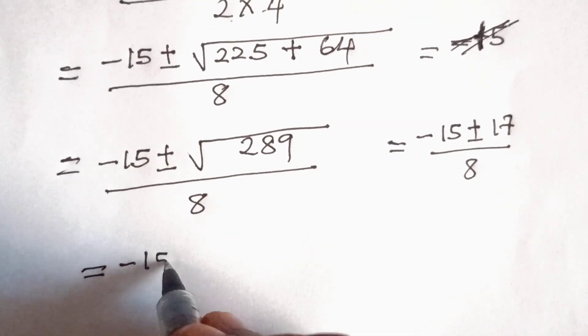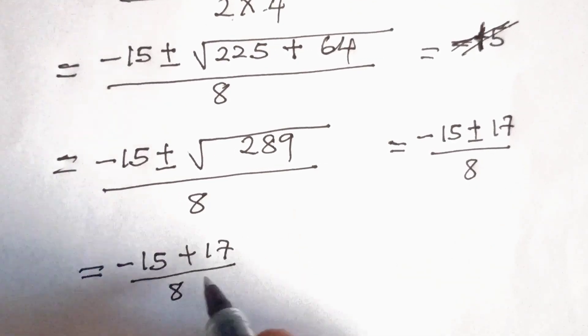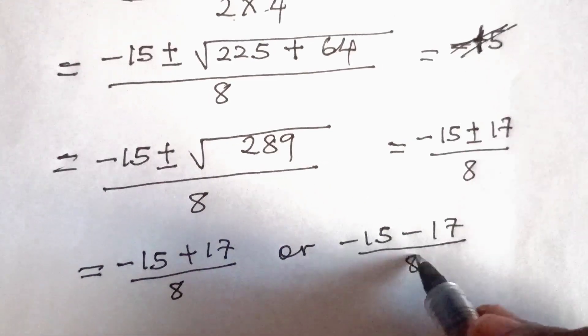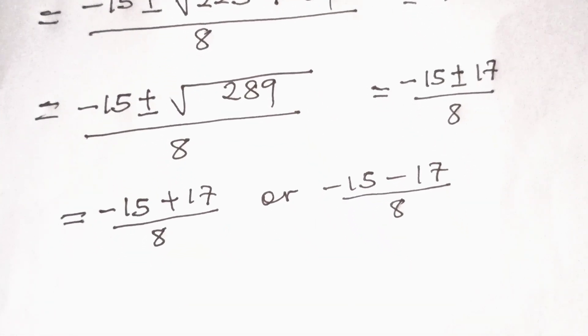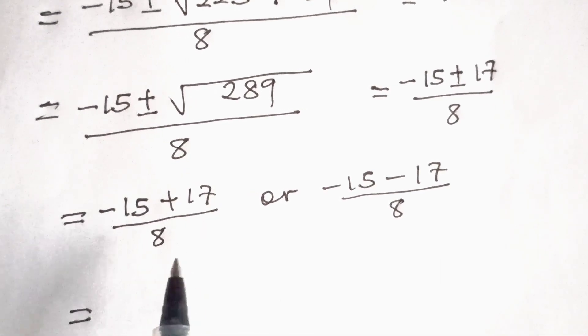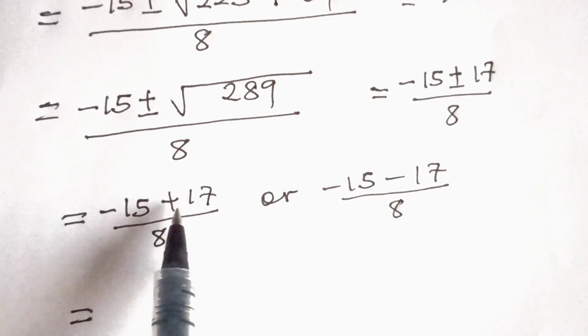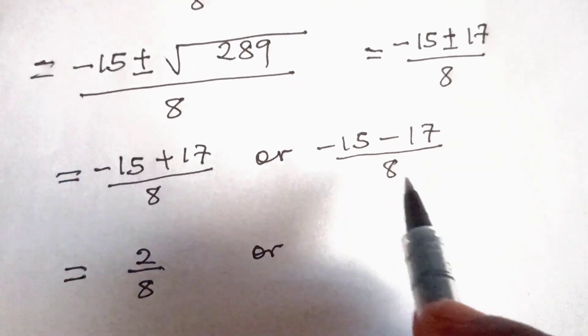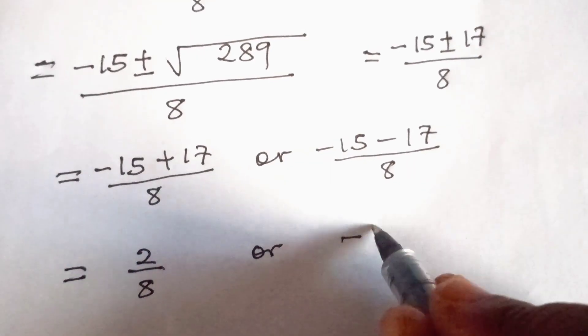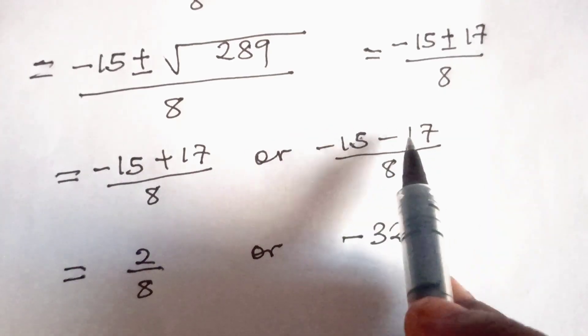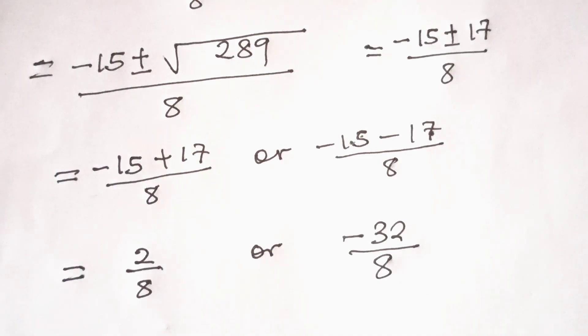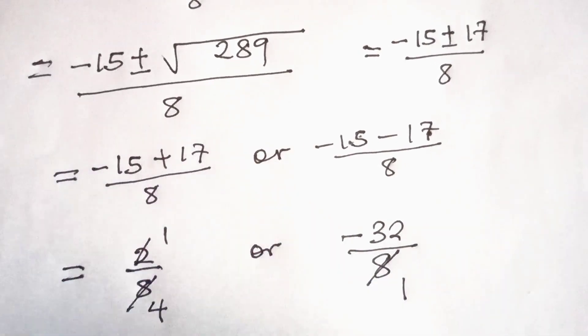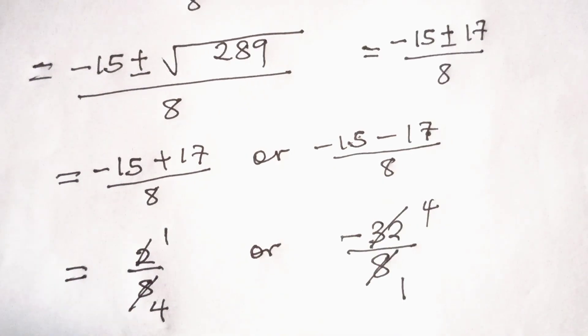So this implies that x is equal to minus 15 plus 17 all divided by 8 or minus 15 minus 17 all divided by 8. So we will have minus 15 plus 17 is the same as 17 minus 15. So up here we will have 2 over 8. And on this side we will have minus 32, which is gotten from adding minus 15 to minus 17, all divided by 8. So here 2 cancels, we have 1 up here and here we have 4. Then here 8 divides 8, 1. 8 divides 32 is 4.